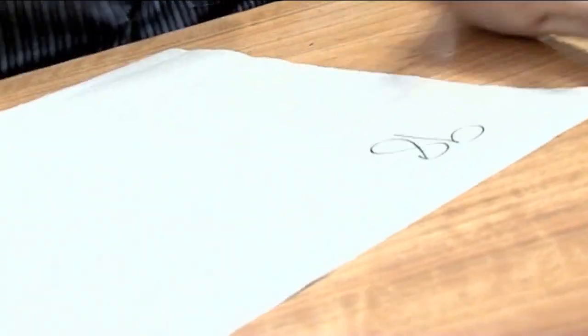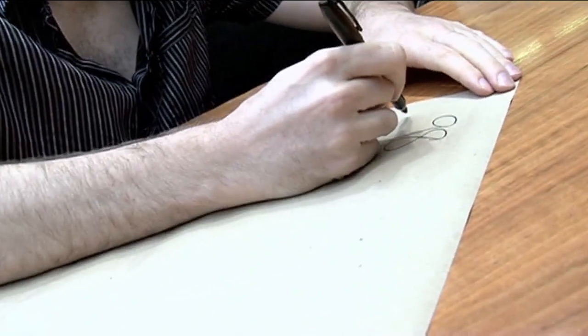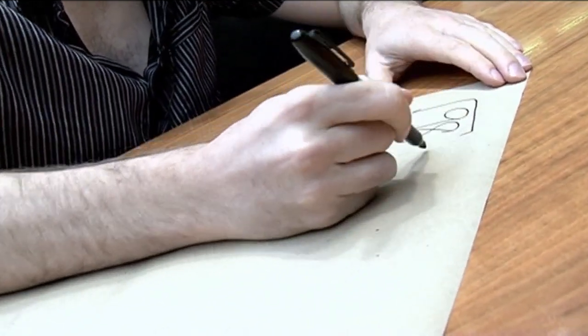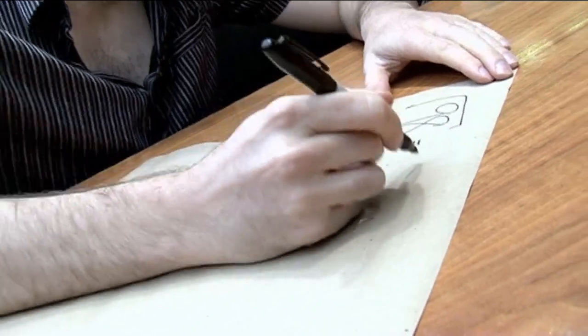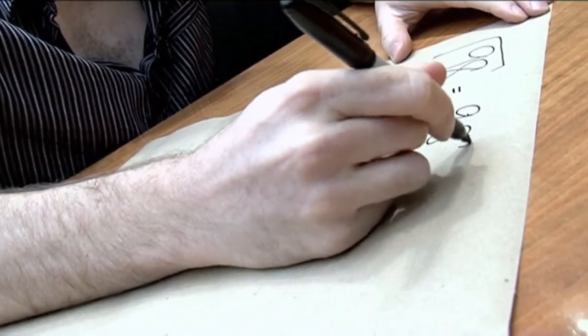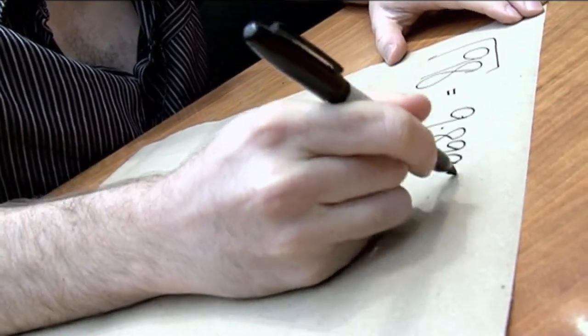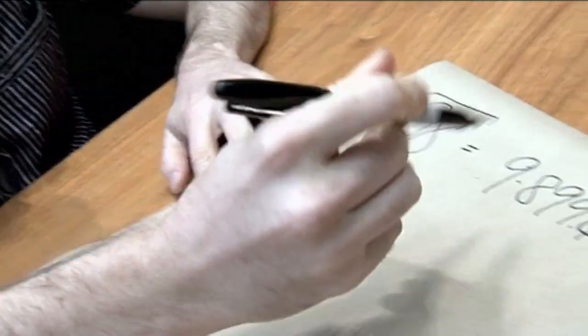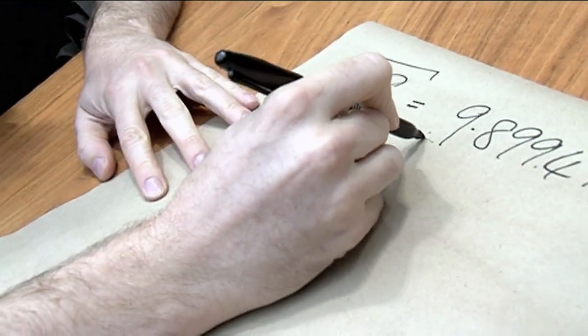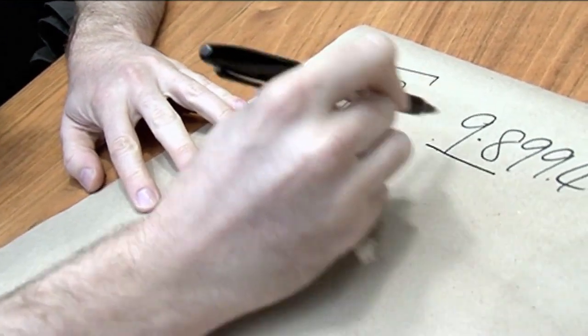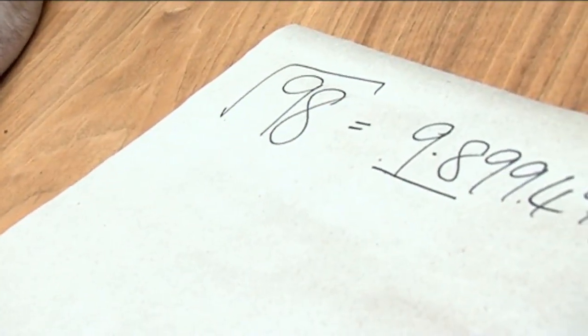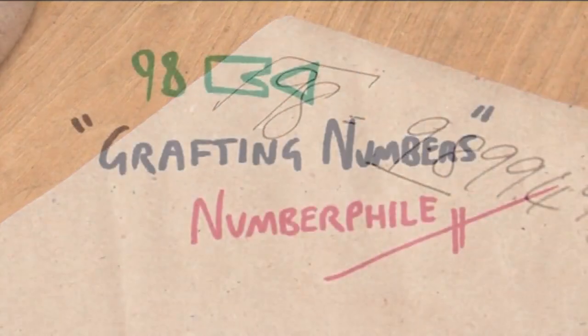I'd like to talk to you about the number 98. 98 is a bit large for people to think it's quite a cool number. However, if you take the square root of 98, it equals 9.89949. What I like is that the first two digits are the same as the digits in the number you were taking the square root of.